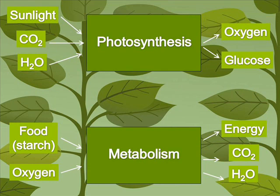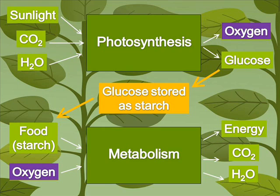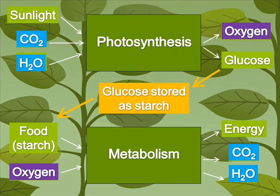Let's take a look at how these two processes work together — photosynthesis with its three inputs and two outputs, and metabolism with its two inputs and three outputs. One output of photosynthesis is glucose. The glucose not needed by a plant is stored as starch, and that same starch is one of the food inputs for metabolism. Also, the oxygen output of photosynthesis is used as an input to metabolism, as illustrated by the purple boxes of oxygen shown here. Finally, the outputs of metabolism — both CO2 and water — are inputs to the process of photosynthesis.